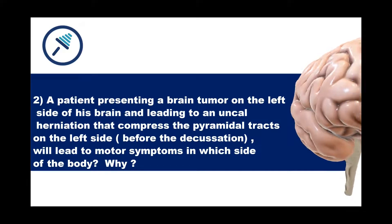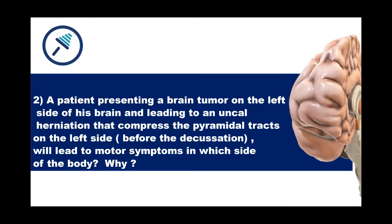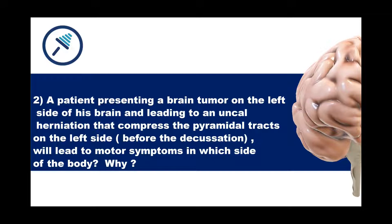Second question. A patient presenting a brain tumor on the left side of his brain and leading to an uncal herniation that compresses the pyramidal tracts on the left side before the decussation, will lead to motor symptoms in which side of the body? Why?